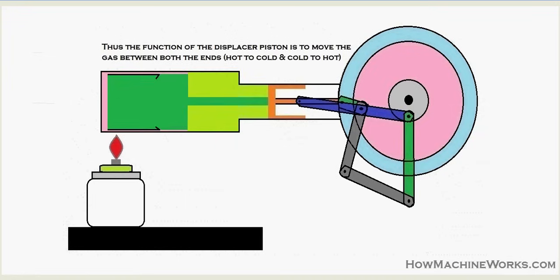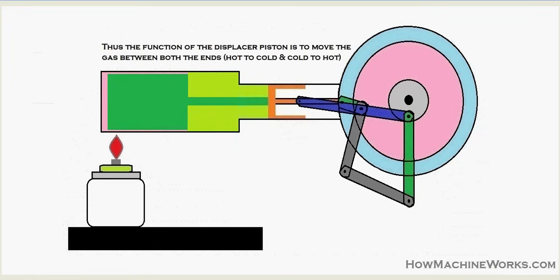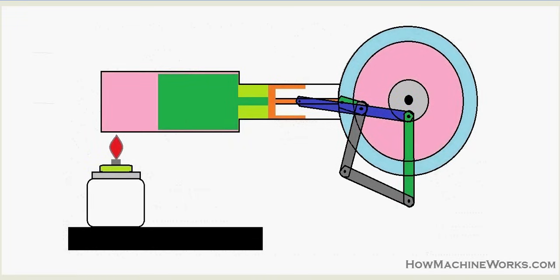You can see the piston moving from the rear side towards the front, and as a result, the hot air gets displaced towards the cold region. You can see the hot air is thus being transferred towards the colder region when the displacer piston moves. Now let's see how the power piston exactly works.